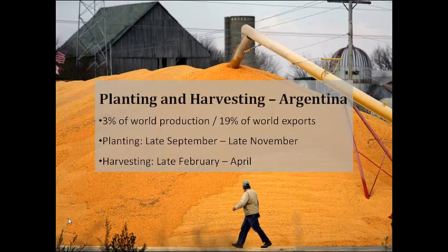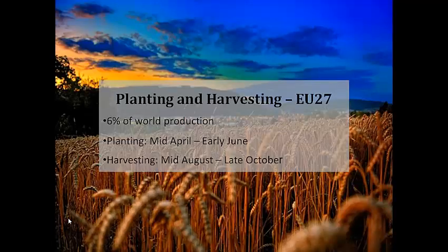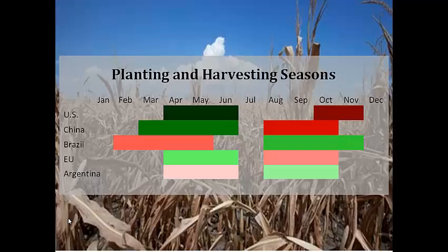Argentina has planting and harvesting seasons similar to Brazil, as these two countries are in the southern hemisphere. The EU, on the other hand, has planting and harvesting seasons very similar to the US. This chart summarizes all of the above planting and harvesting seasons — green indicates planting and red indicates harvesting, with the shade of color indicating the size of the crop planted or harvested. From the above, we can postulate that stocks are at their lowest and most uncertain from late May to mid-July, and at their highest by November.